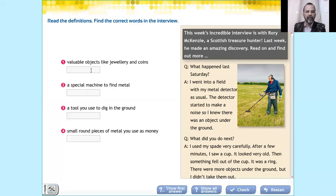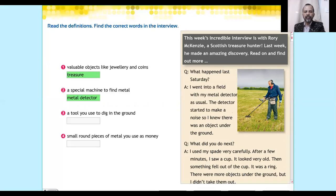It says 'valuable objects like jewelry and coins'. In the article, you'll find 'treasure'. Number two: 'a special machine to find metal'. You'll find 'metal detector'. You continue with the same activity until you finish the exercise. The next activity is activity number two, and we continue with everyday objects.